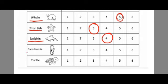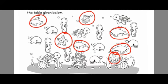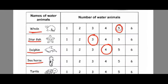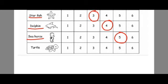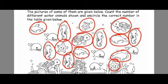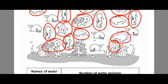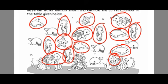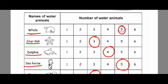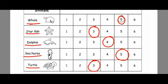Now let's see the next one — seahorse. See the picture carefully; we need to find out how many of this type of water animal there are: 1, 2, 3, 4, 5 — 5 seahorses, so we will circle 5. And the last one — we need to count the turtles: 1, 2, 3 — I can see only 3 turtles, so we will circle 3. This is the way how we can represent it in the form of a table. I hope this chapter is clear to you.